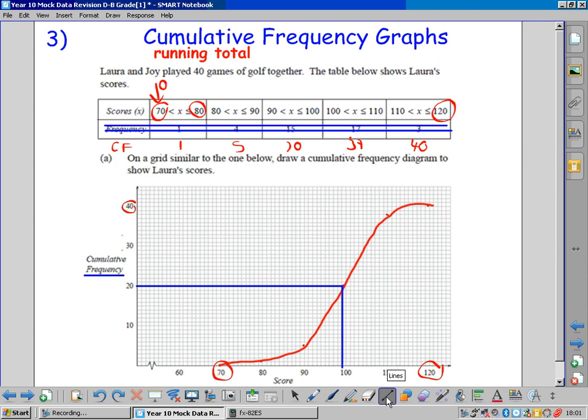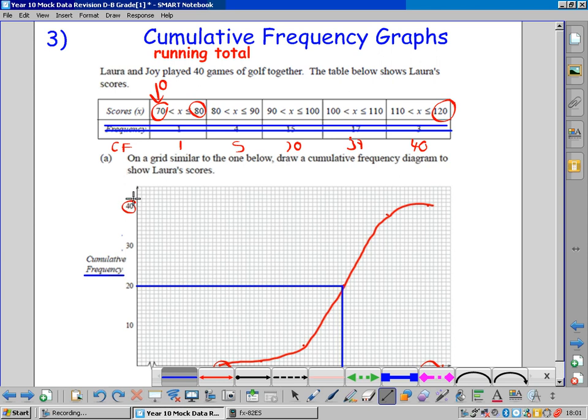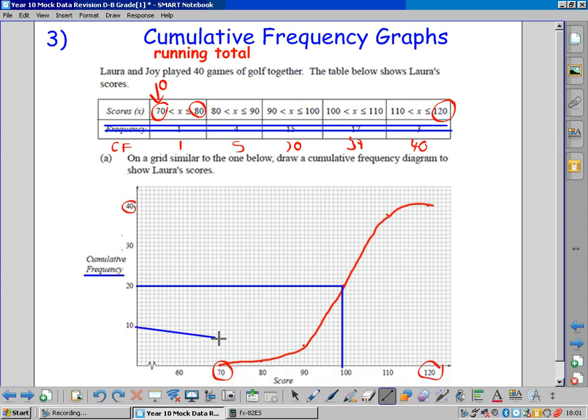We need a lower quartile. So we see there's 40 pieces of information. We do a quarter of it. We divide by four. We go across to our graph. And we go down. That seems to be about 94. So we've got the lower quartile.